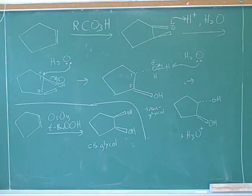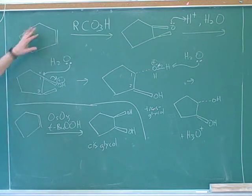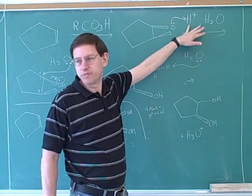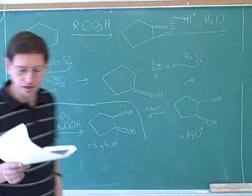On the other hand, if you're trying to synthesize a trans-glycol, make an alkene, then use a per-acid to turn it into an epoxide, and then we can use acid plus water to get the trans-glycol.